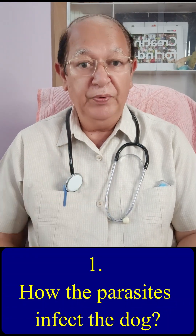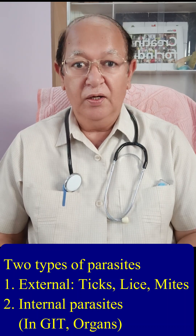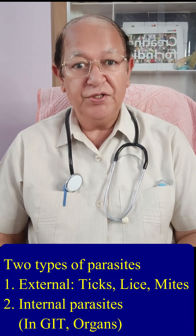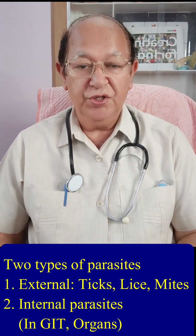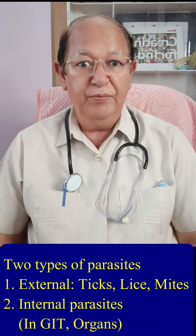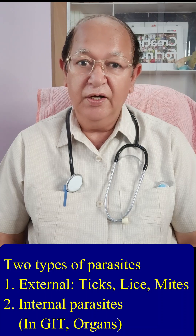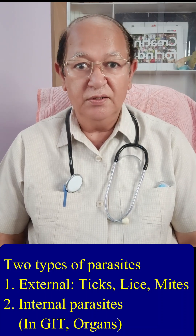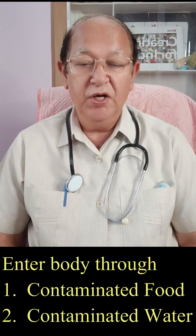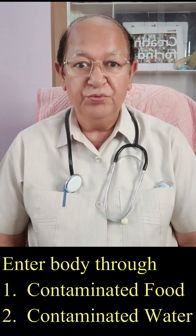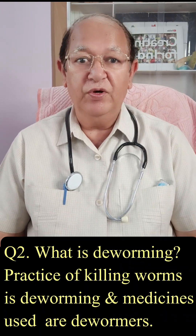Question number one: how do parasites infect dogs? There are two types of parasites. Number one, external parasites like ticks, mites, fleas, etc., which attach to the skin of the dog. The second type of parasites live inside the body — in the gastrointestinal tract, in the liver, kidneys, and many other internal organs. Eggs, larvae, or cysts of these parasites enter into the body through contaminated food and contaminated water.